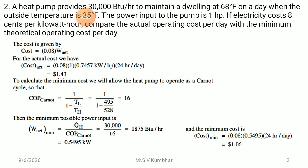To calculate the minimum cost, we allow the heat pump to operate as a Carnot cycle. COP of Carnot cycle = 1 upon (1 minus TL/TH). Rearranging the equation: 1 upon (1 minus TL/TH). TL and TH are given in Fahrenheit, so convert to Kelvin.